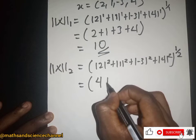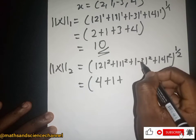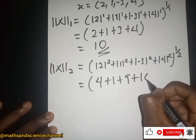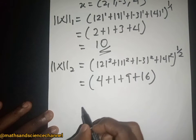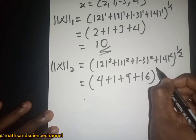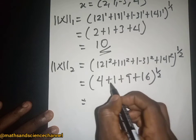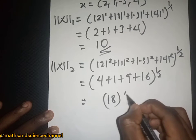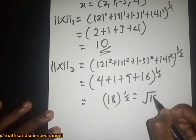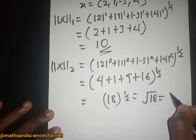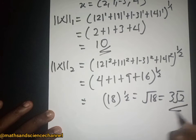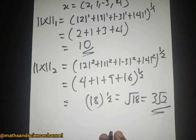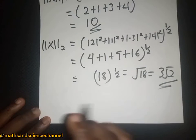So we have 4 plus 1 plus 9 plus 16, which gives us 30 — wait, in all we get 4 plus 1 is 5, plus 9 is 14, plus 16 is 30. Actually the result here is the square root of 30. The transcript indicates the sum is 18, giving us the square root of 18, which equals 3 root 2.